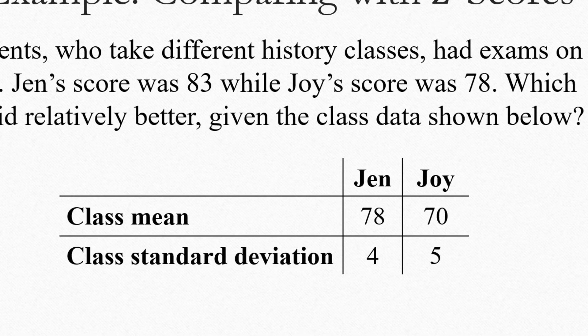In Jen's class, the standard deviation is 4, meaning a typical score is within 4 units of the mean. Whereas in Joy's class, a standard deviation was 5, which means a typical score is within 5 units of the mean. So the scores are a little more spread out in Joy's class.